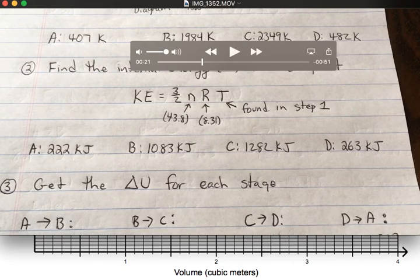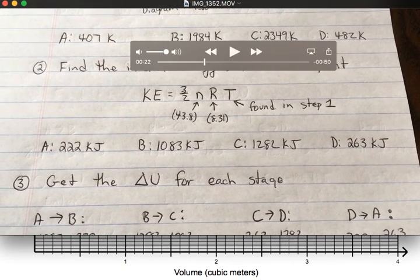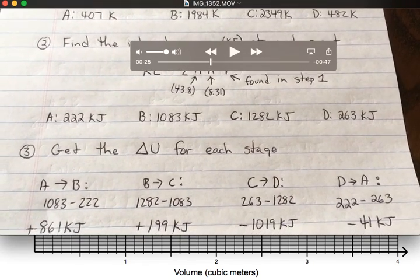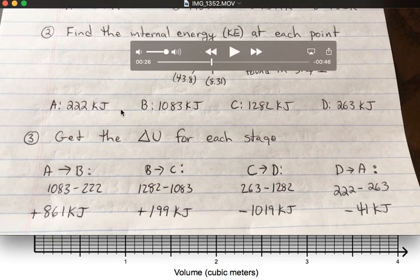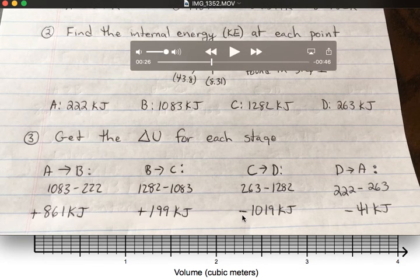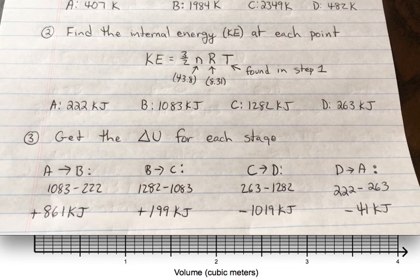Then you get the change in internal energy for each stage. So you go from A to B, B to C, C to D, and D to A. Remember, when you're finding change, it's final minus initial. So it's the energy at B minus the energy at A, and so on. On the positive ones, that's telling you that energy entered your system. And for the negative ones, it means you had a net loss of internal energy. Energy left your system.